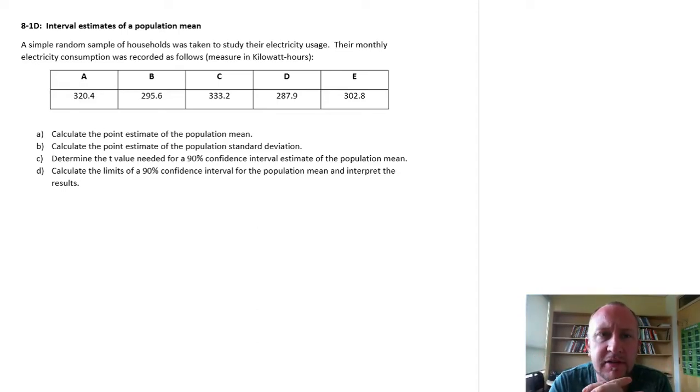Hello, welcome back. In this exercise we're going to calculate another confidence interval estimate for an unknown population mean. So we'll need a point estimate of the mean, point estimate of the standard deviation, and then we'll use our t-tables because we're going to be using the t-distribution as a result of not knowing the population standard deviation. And also we have a fairly tiny sample that we're working with. So in this exercise we've got a sample of households. We have their monthly electricity usage. So let's go ahead and calculate the point estimate of the mean.